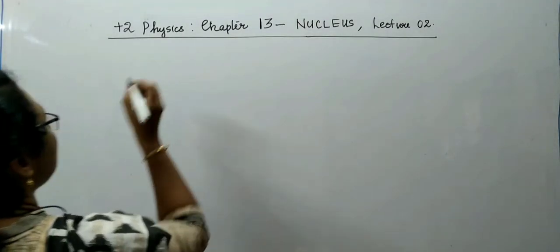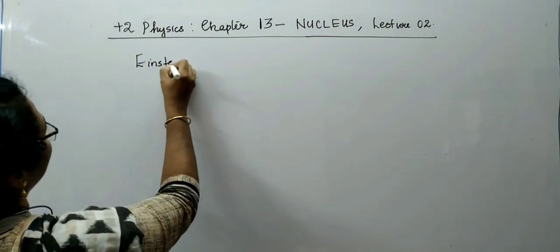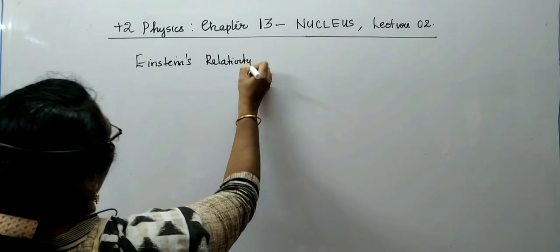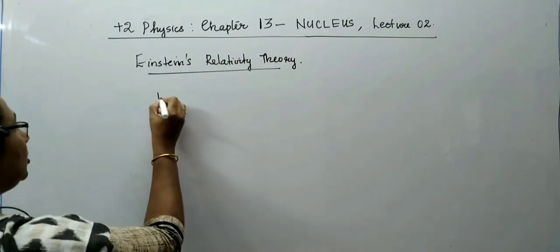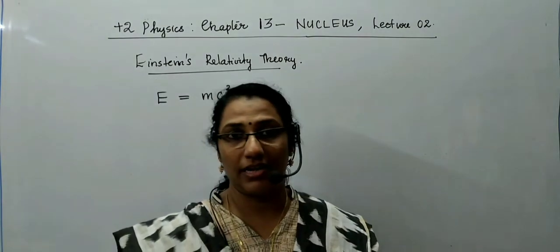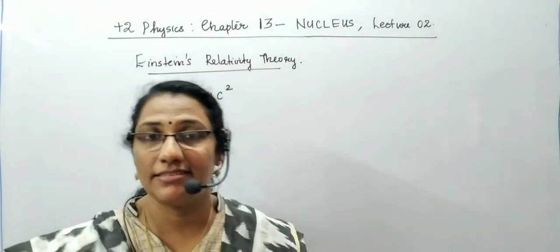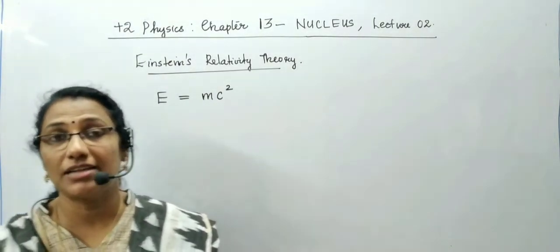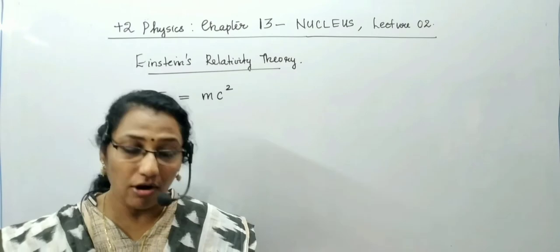Einstein proposed a theory called relativity theory. Einstein's relativity theory states that the energy E of a body can be written as E = mc². By analyzing this equation, it is already established that mass and energy are interconvertible — mass can be converted into energy according to E = mc².